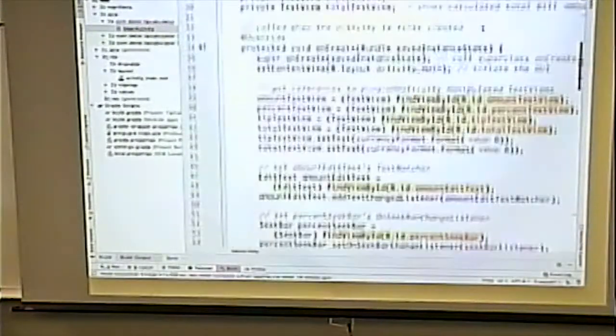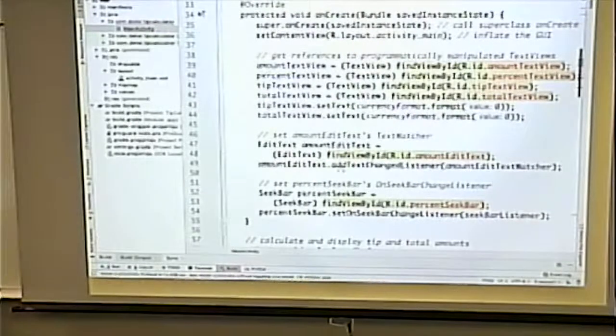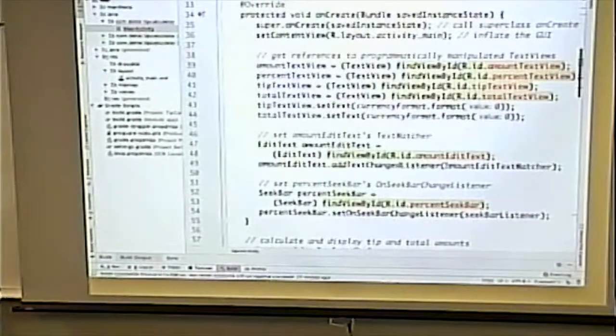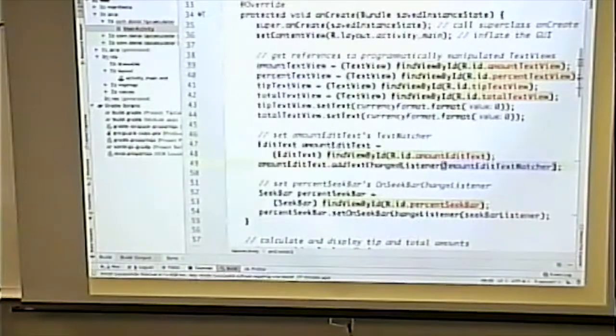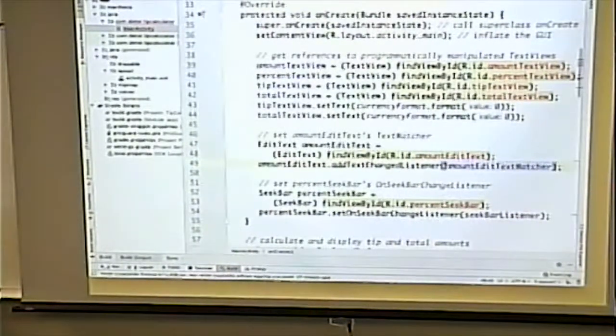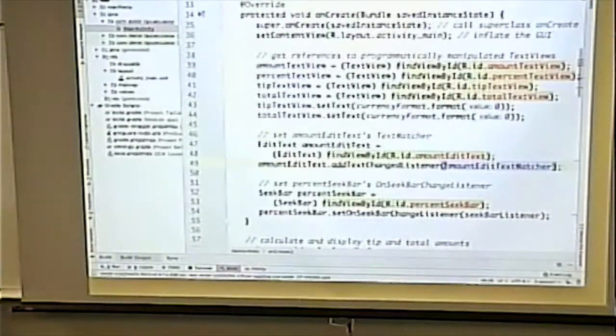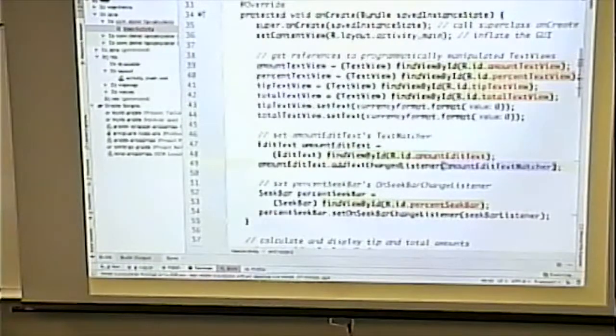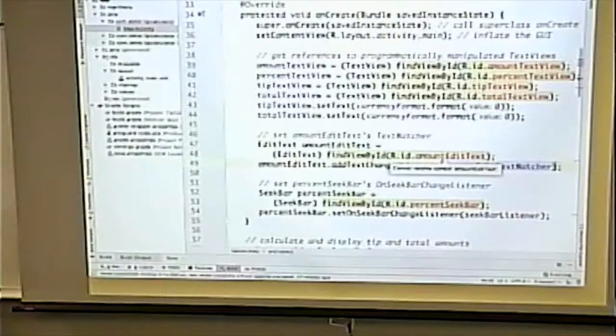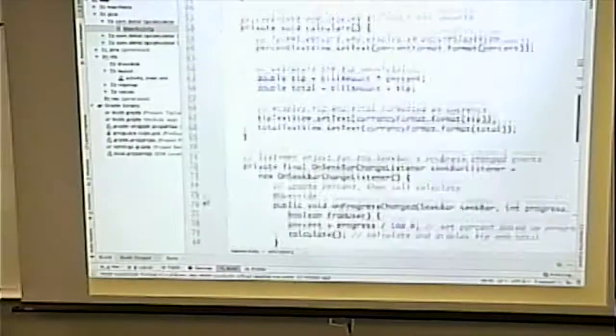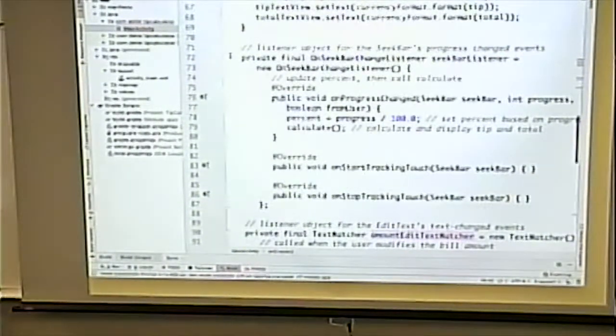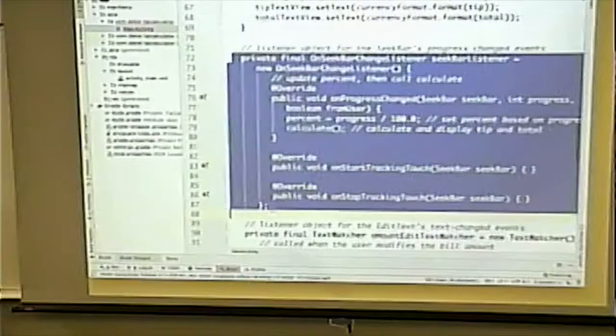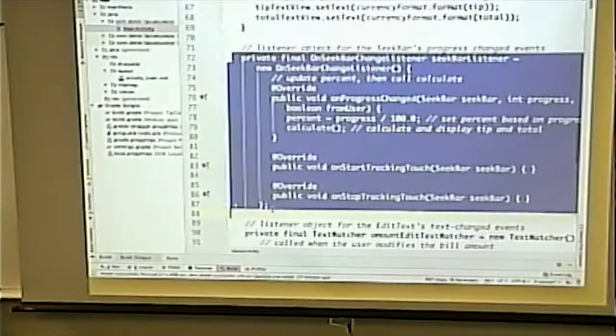Our activity does not implement any listeners at all. So I'm not allowed to say add text change listener this. Yes. Can't do that. Because this activity object doesn't have those interfaces in it. Doesn't implement those interfaces. So what objects do implement those interfaces?